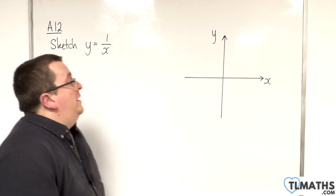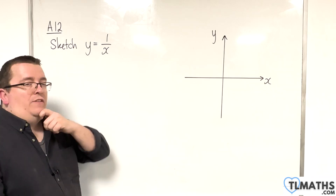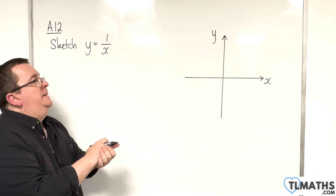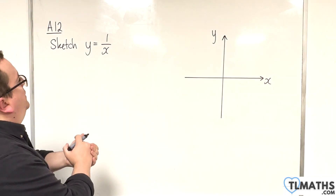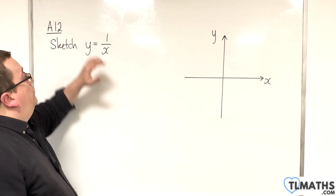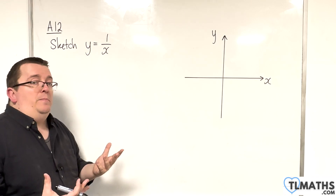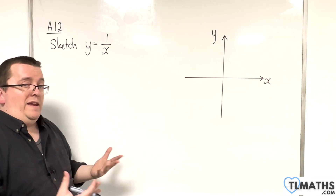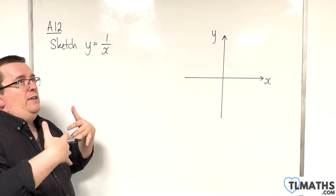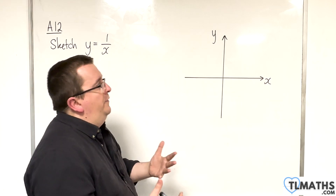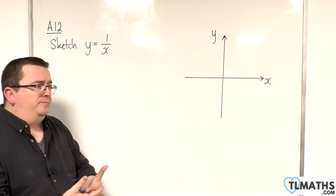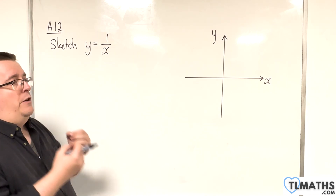This curve has some different behaviour from what we've seen previously with linear graphs, quadratic graphs, and cubics. When you substitute in x equals 0, you're going to have 1 divided by 0. We can't divide by 0, so the function breaks there — you cannot substitute x equals 0 into this. This is the first graph that has a restriction imposed upon it. When x is 0, there is a problem.